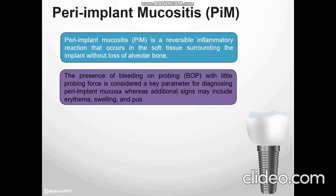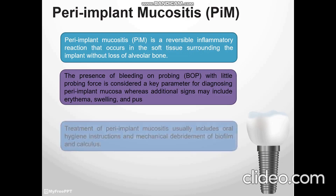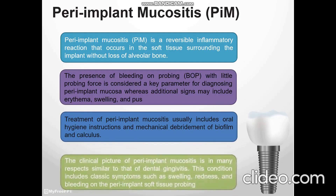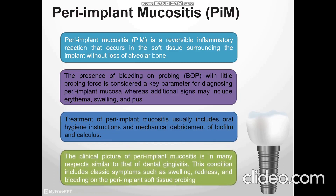Additional signs may include erythema, swelling, and pus. Treatment of peri-implant mucositis usually includes oral hygiene instruction and mechanical debridement of biofilm and calculus. The clinical picture of peri-implant mucositis is, in many respects, similar to that of dental gingivitis. These conditions include classic symptoms such as swelling, tenderness, and bleeding on probing of the peri-implant tissue.